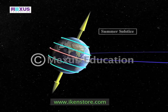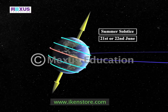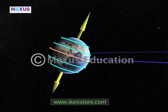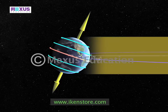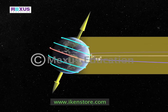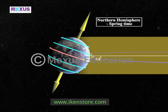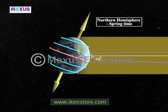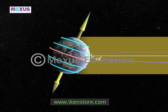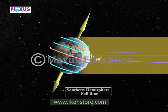The summer solstice occurs on the 21st or 22nd of June. On this day, the sun's rays are directly perpendicular to the Tropic of Cancer, resulting in the northern hemisphere receiving the largest amount of solar radiation. Because of this, the daytime in the northern hemisphere is the longest in the year, while the nighttime in the southern hemisphere is the shortest in the year.